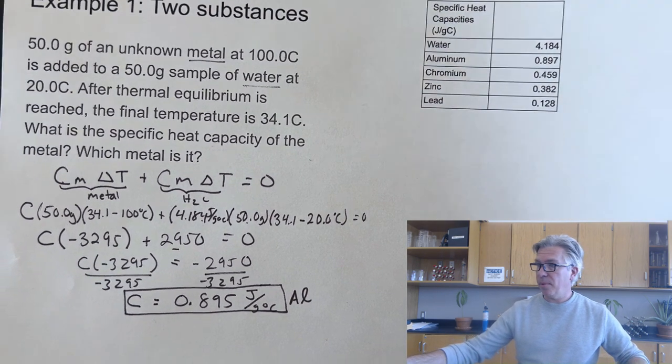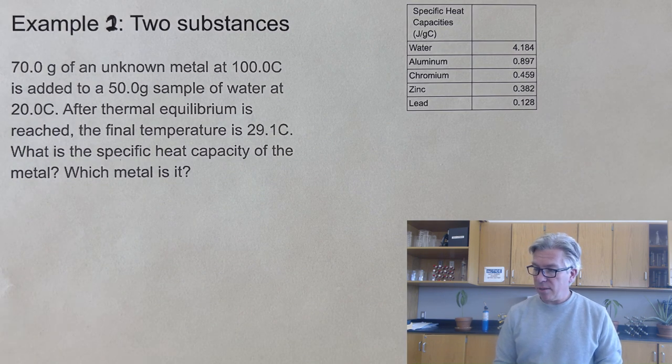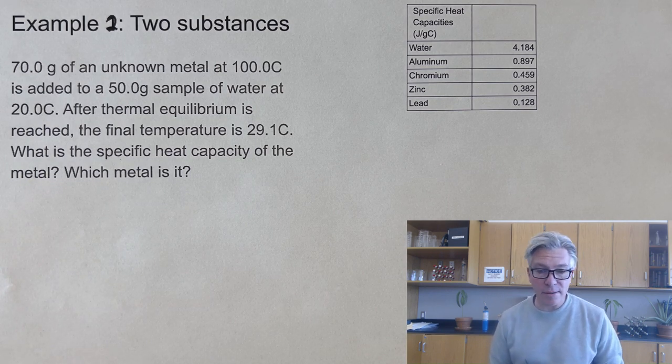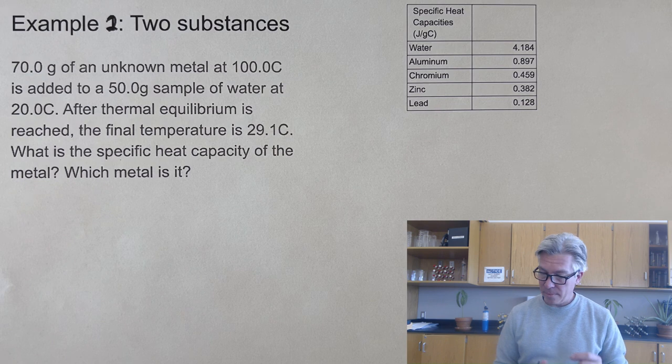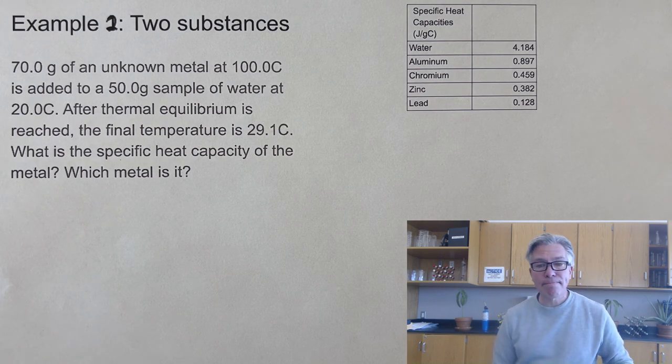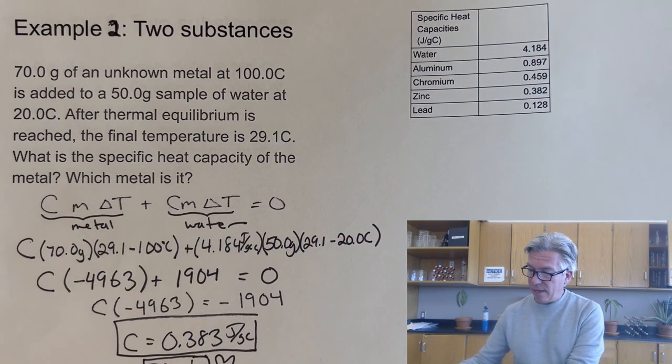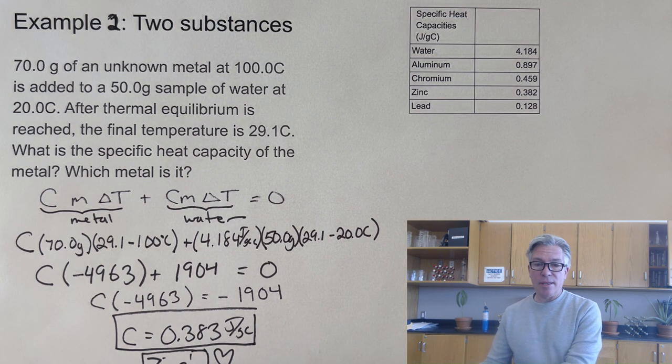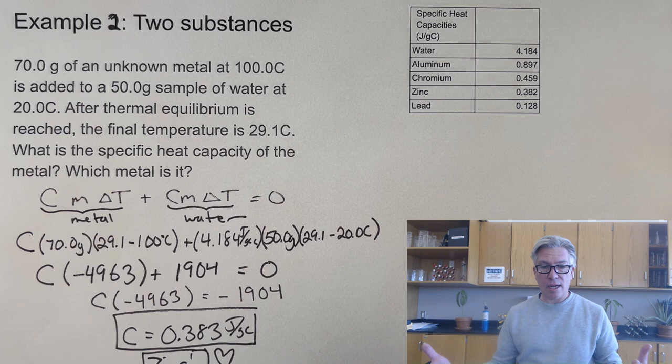Are you ready to try one yourself? 70 grams of an unknown metal into 50 grams of water at 20. The final temperature is 29.1. Take a moment, pause the video and see if you can solve for the heat capacity of the metal. If you came up with a value very close to 0.382 or 0.383 and figured out that it was zinc, then congratulations.